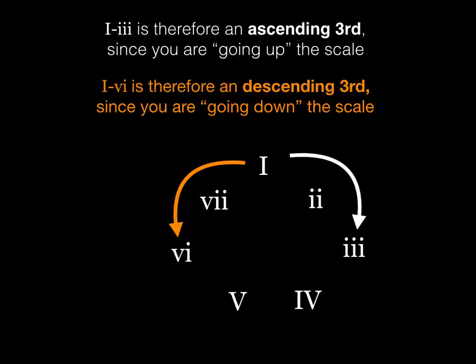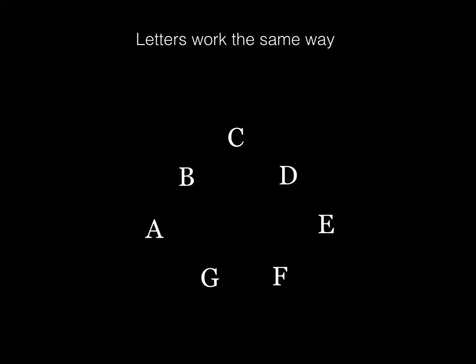Now one to six, on the other hand, is a descending third. You have to go backwards in the scale: one, seven, six. You're going down in the scale; it's a descending third. Letters work the same way.